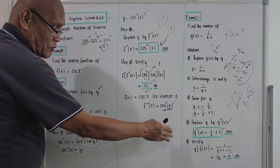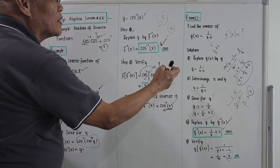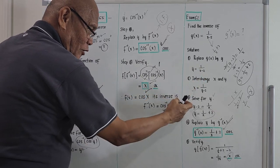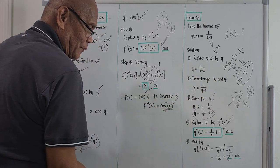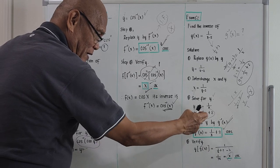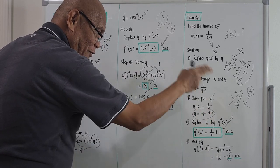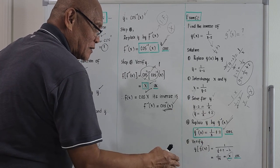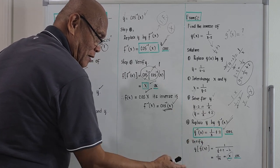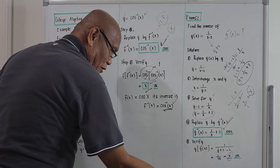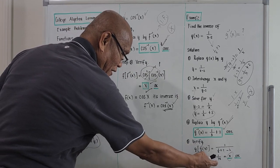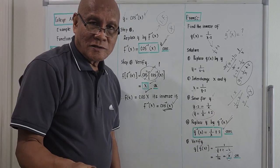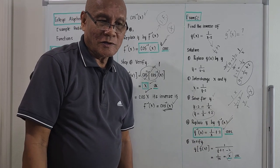It's easy to compute inverse functions as long as you know the four procedures: replace f of x by y, interchange x and y, solve for the value of y, then replace y by the designation g to the minus one or f to the minus one depending on the function. Verify that after substitution and simplification, what comes out is x. Good morning from Los Angeles, this is Professor De Vijay De Los Rey.